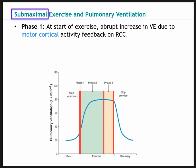During exercise, capillary gas exchange at the alveoli and muscle tissue must increase to meet the demands for oxygen delivery and CO2 removal. To increase gas exchange, we increase pulmonary ventilation. To augment gas exchange at the alveoli and active tissue, blood flow through capillary beds must also increase — this relates to an increase in cardiac output with exercise. We'll look at three phases of pulmonary ventilation during submaximal exercise.